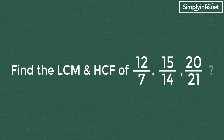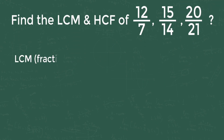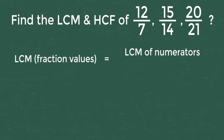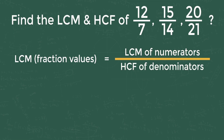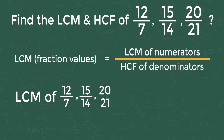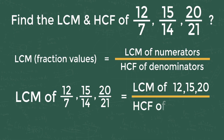To find the LCM, we use the formula: LCM of fraction values equals LCM of numerators divided by HCF of denominators. In this problem, the numerators are 12, 15, 20 and the denominators are 7, 14, and 21. So LCM of 12/7, 15/14, 20/21 equals LCM of 12, 15, 20 divided by HCF of 7, 14, 21.